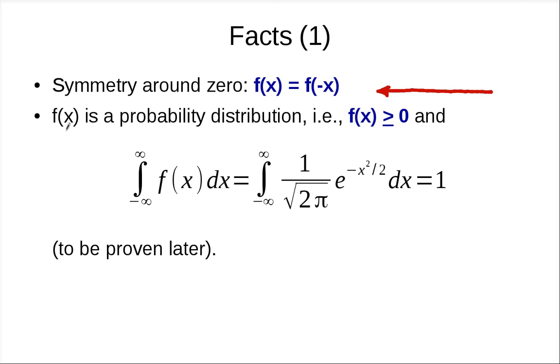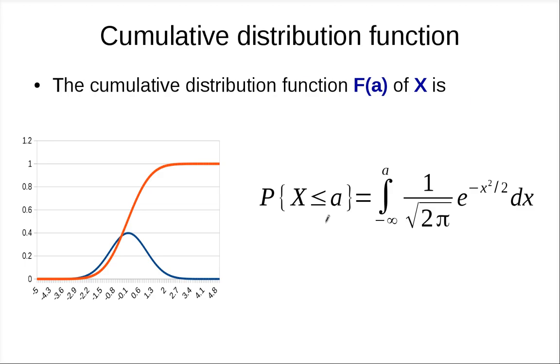Another is that f(x) is actually the probability distribution. So to check that, first of all, you need to show that f(x) is larger than 0 and the integral from minus infinity to infinity of f(x) dx is 1. We're not going to do it now, but let me claim for now that it is actually 1. So f(x) is the density function.